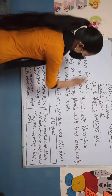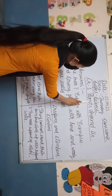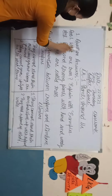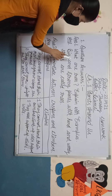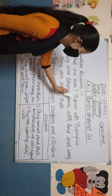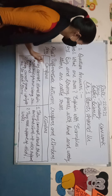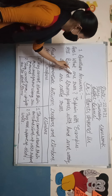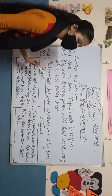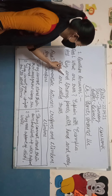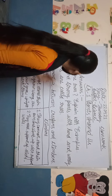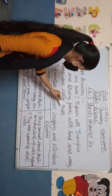Chapter 1, subject science, plants around us. Question 1: What are trees? Big and strong plants with hard and woody stems are called trees.